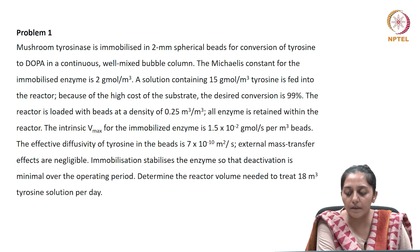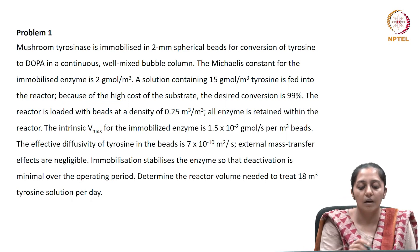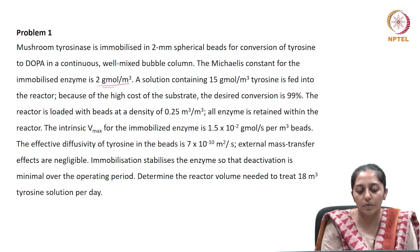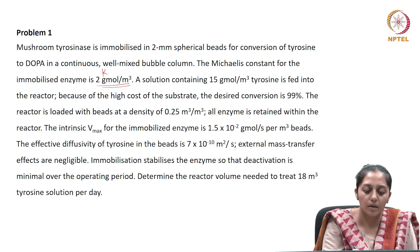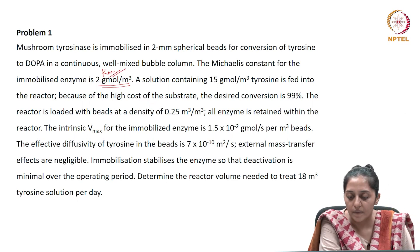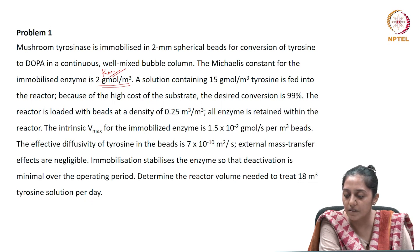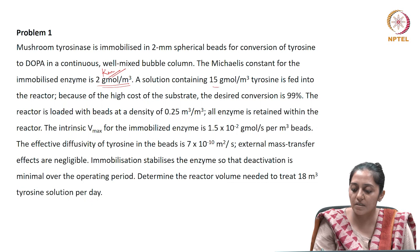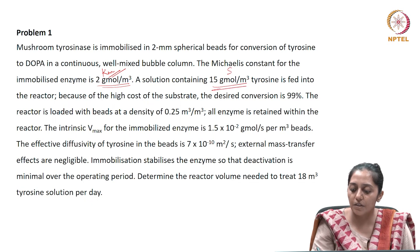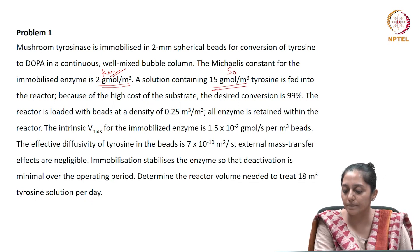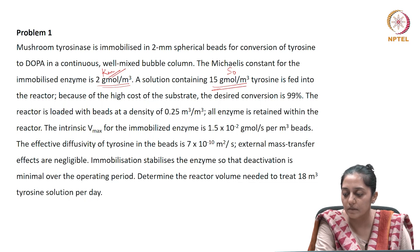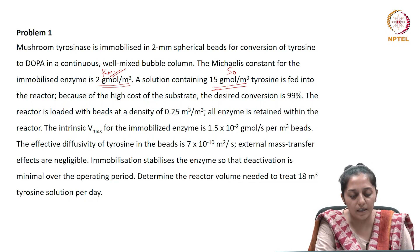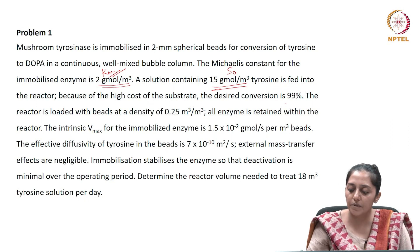The Michaelis-Menten constant Km for the immobilized enzyme is 2 gmol/m³. A solution containing 15 gmol/m³ tyrosine is fed into the reactor. Because of the high cost of the substrate, the desired conversion is 99%.